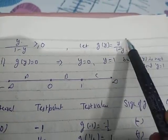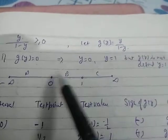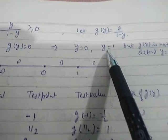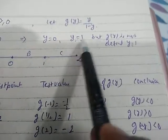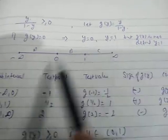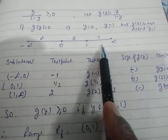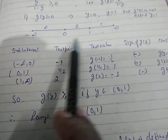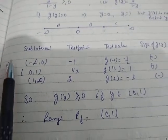Since it is a rational function, let g(y) = y/(1-y). Setting g(y) = 0 gives y = 0, and g(y) is not defined when y = 1. So the three intervals are: A = (-∞, 0), B = (0, 1), and C = (1, ∞). These are the three sub-intervals for the sign analysis.